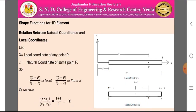Shape functions for one-dimensional elements, also known as the relation between natural coordinates and local coordinates. Here, x is the local coordinate at any point P, and epsilon (ε) is the natural coordinate of the same point P. The natural coordinate system ranges from ε = -1 at node 1 to ε = +1 at node 2.